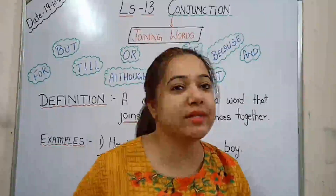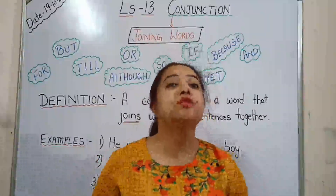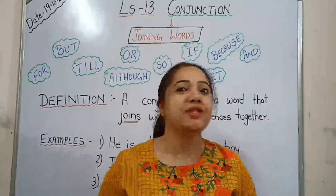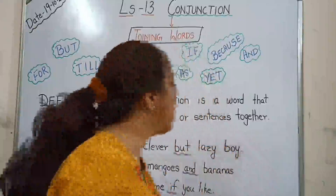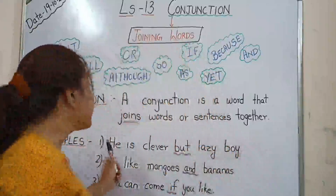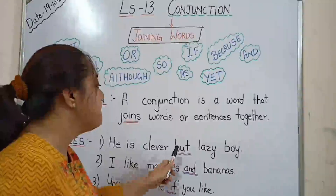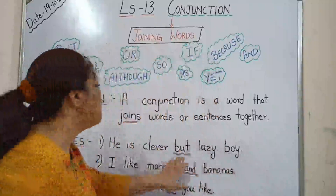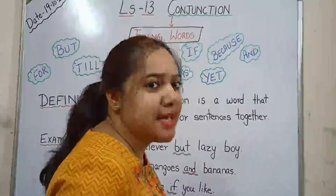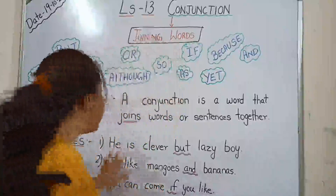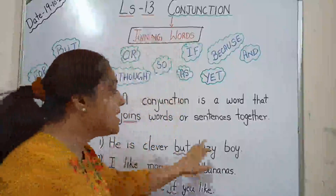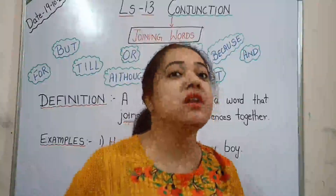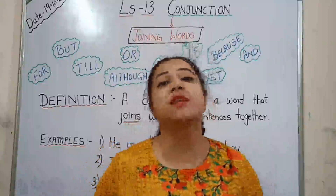For example, students, if we want to write two different sentences, it shortens the word by combining them as one. Let's do it through an example. First: he is clever but lazy boy. We have used here 'but'. Let us think that we have written: he is a clever boy. He is a lazy boy.